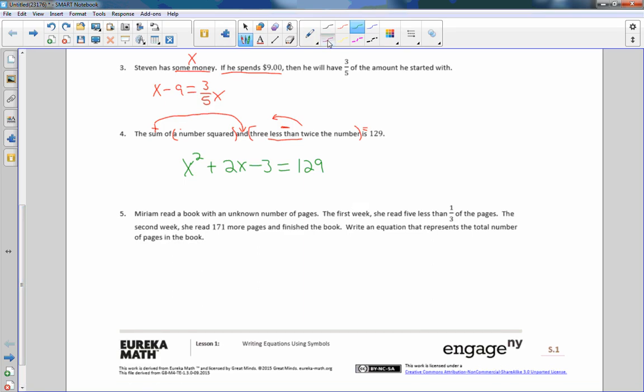Number five. Miriam read a book with an unknown number of pages. The first week, she read five less than one-third of the pages. Five less than. Less than means minus. Read it this direction. One-third of the pages, one-third of the pages. We'll call the pages P. One-third P, less than, minus, five. Five. One-third P minus five. That is the first week. I will put that in parentheses just to keep it separate. There's week one.